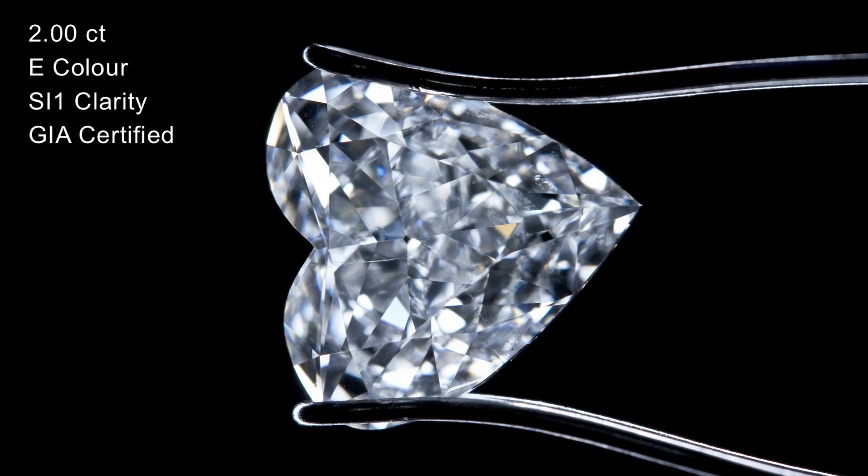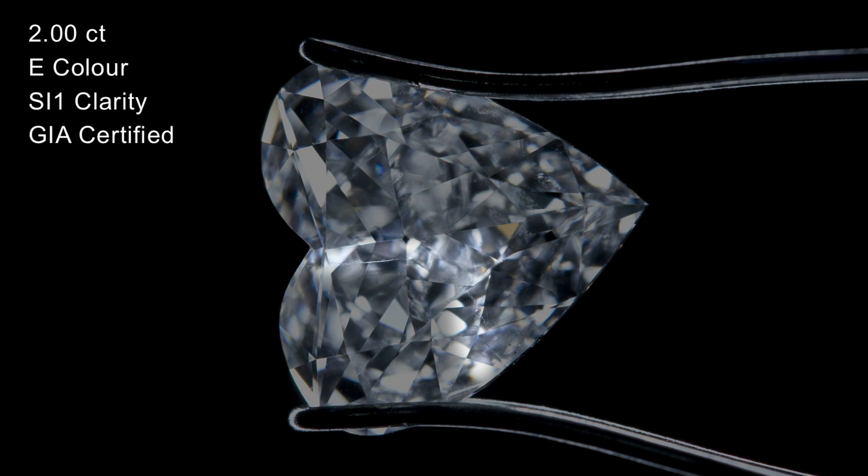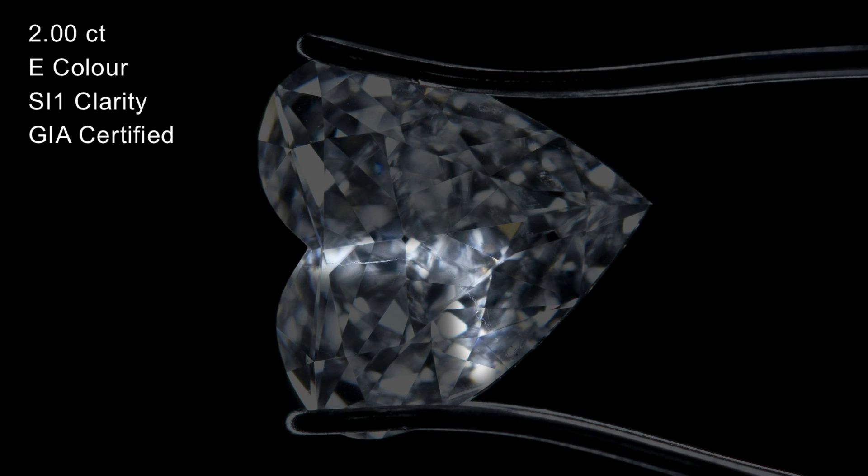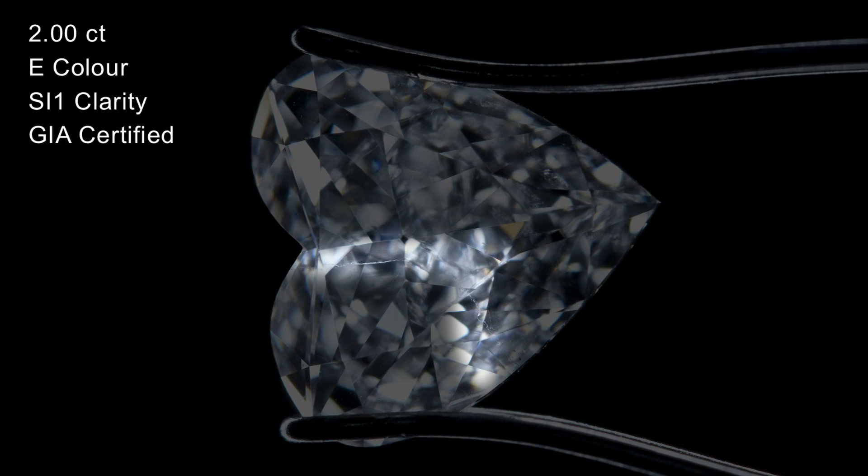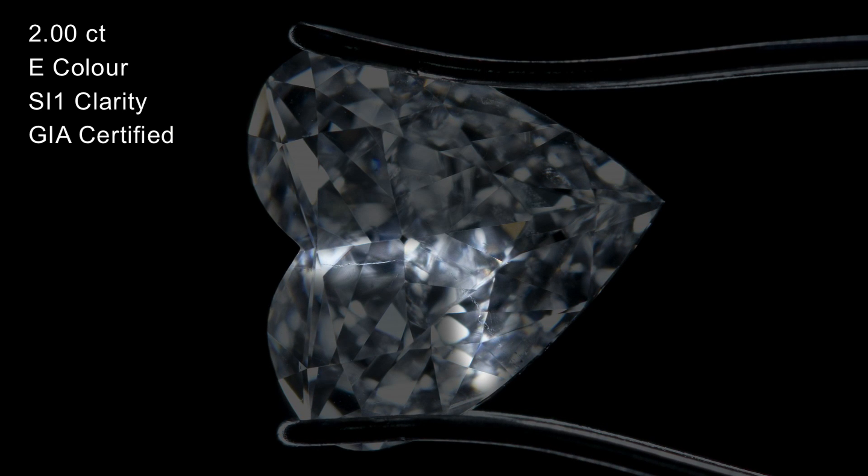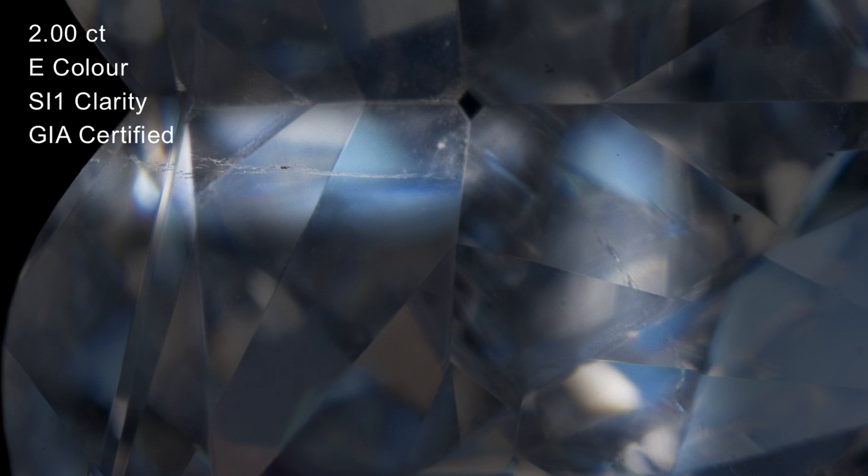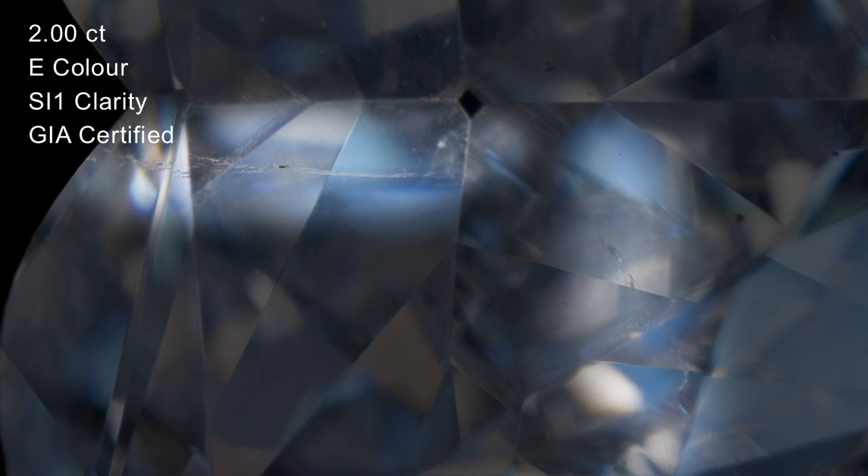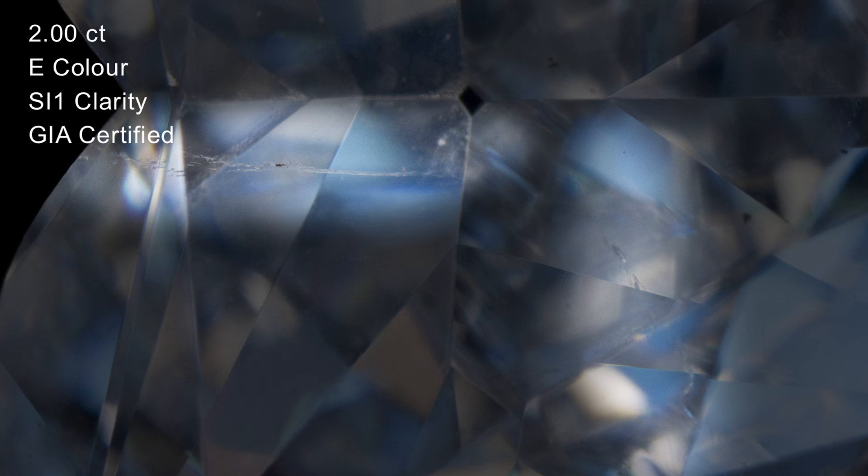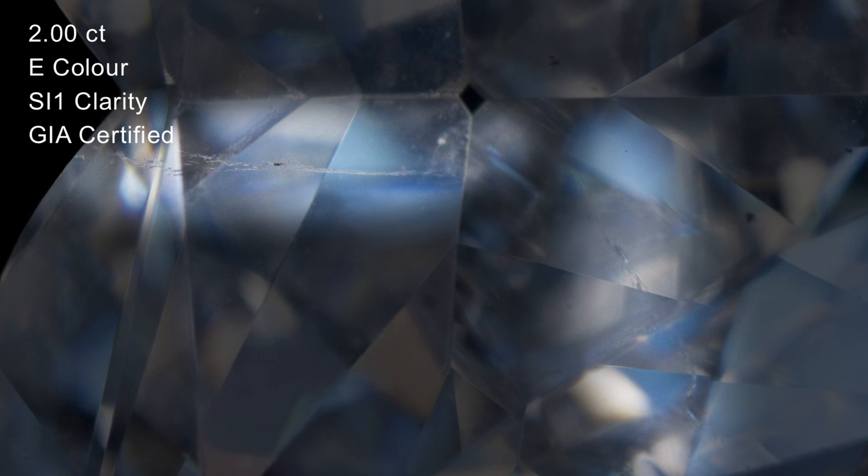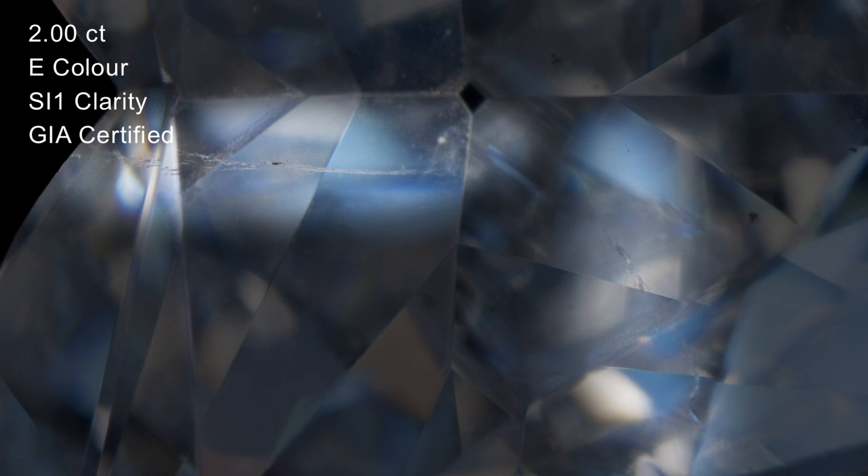There are some other less common types of inclusions, such as twinning wisp. These are formed when a diamond stops growing, and then starts growing again, maybe thousands of years later, but in a different direction. This change in grain leaves a mark in the stone, rather like the crown in your hair or a knot in a piece of wood. These inclusions are very common in heart-shaped stones, as the resultant twin stone is a very suitable shape for a heart-shaped diamond.